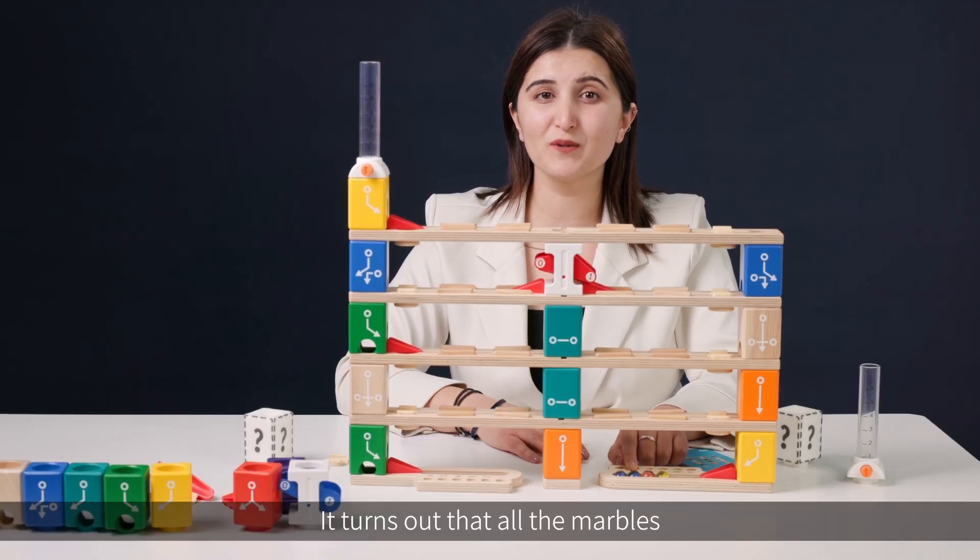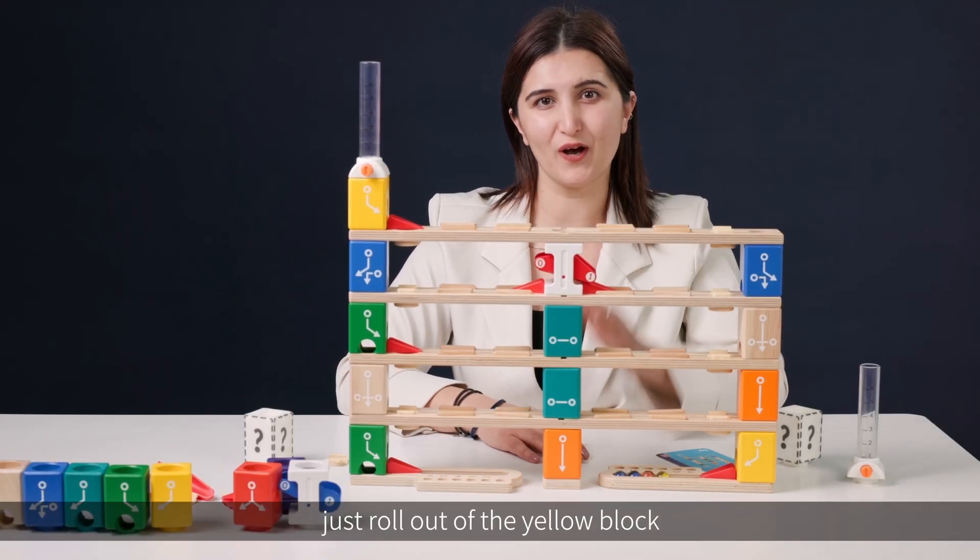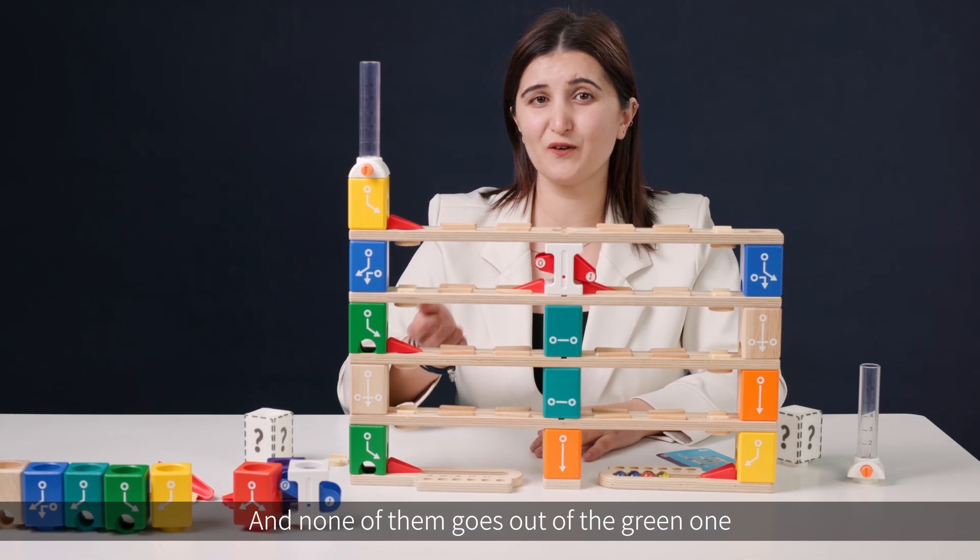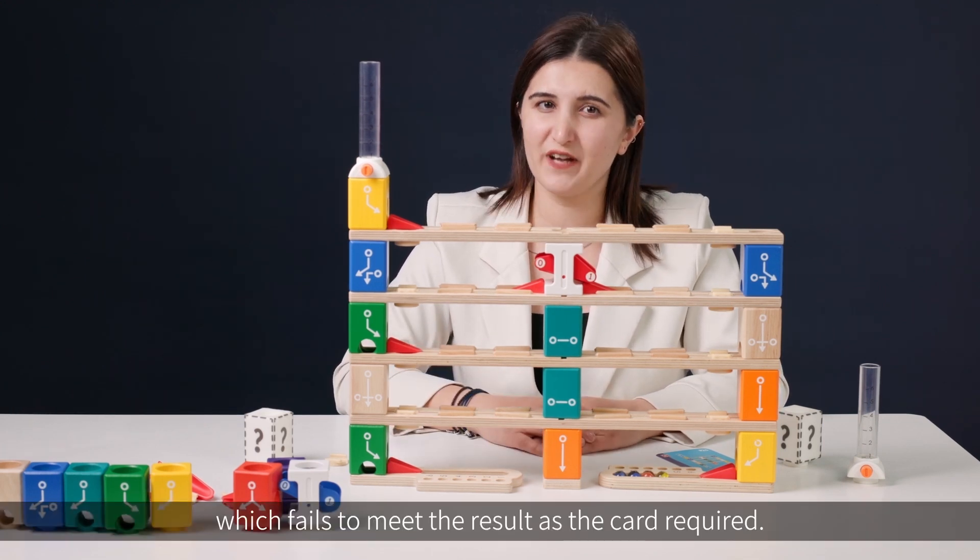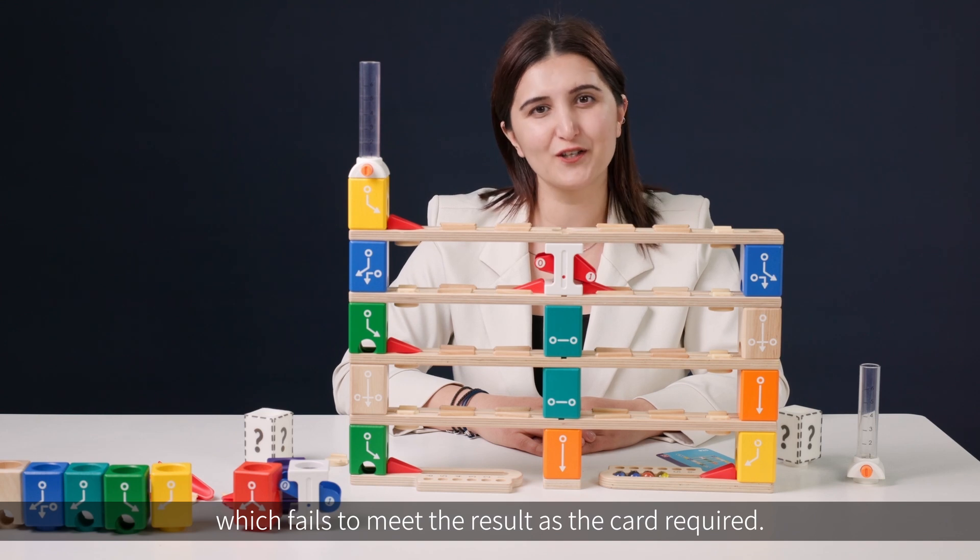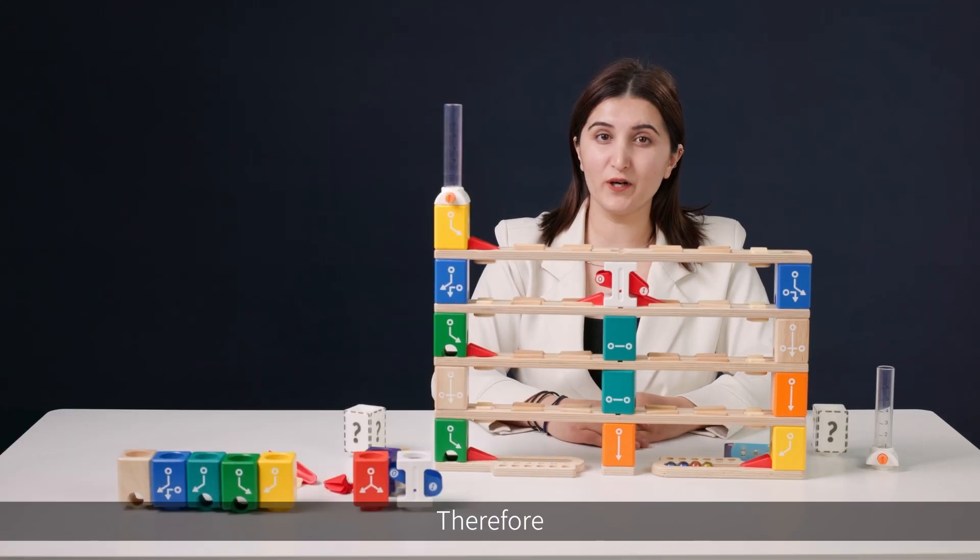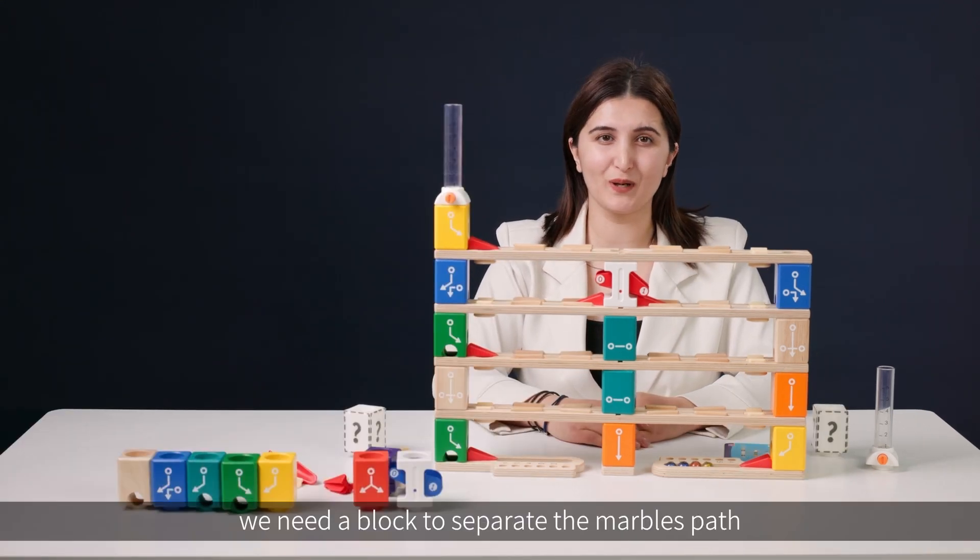It turns out that all the marbles just roll out of the yellow block and none of them goes out of the green one, which fails to meet the result as the card required. Therefore, we need a block to separate the marble's path.